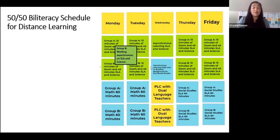While Group A is working synchronously with the teacher, Group B is working asynchronously on Spanish language arts integrated with science via asynchronous video or a different task. For example, Group A could be working on oracy building and background knowledge in a whole group setting, while Group B watches a video to build background on that same content.